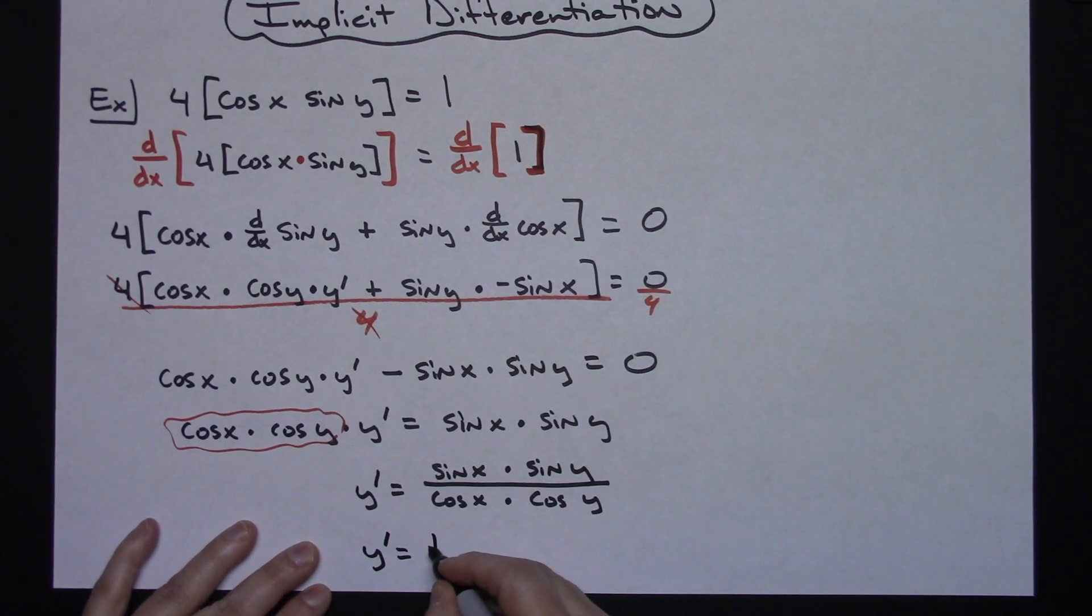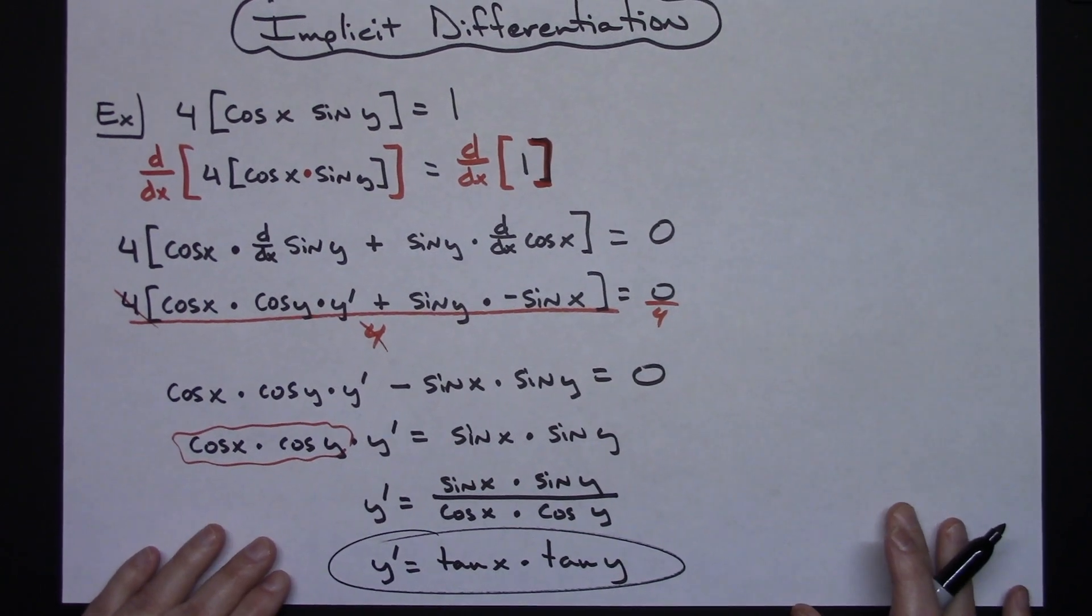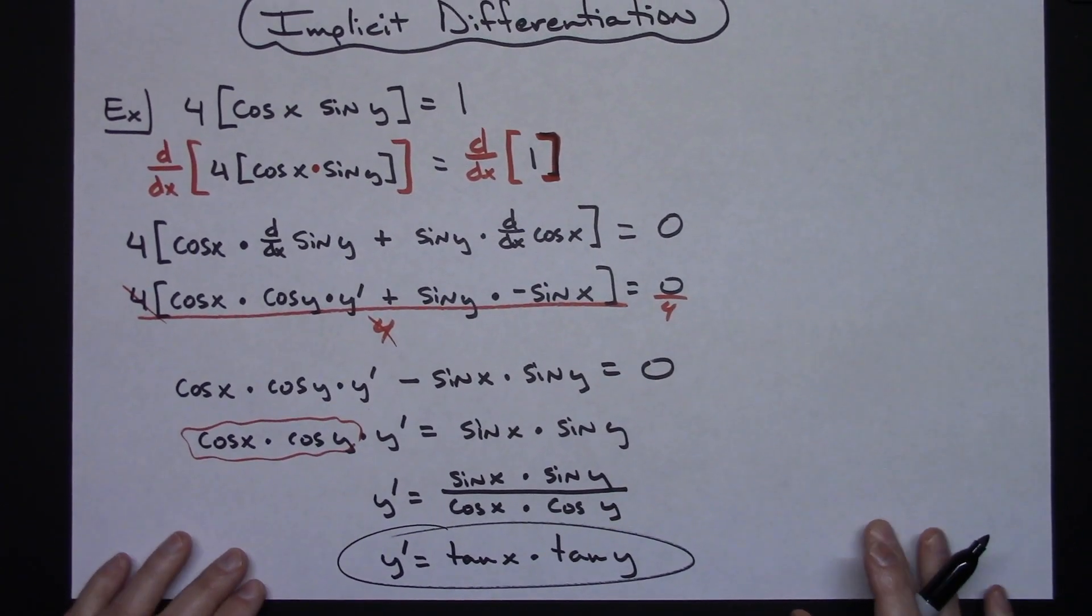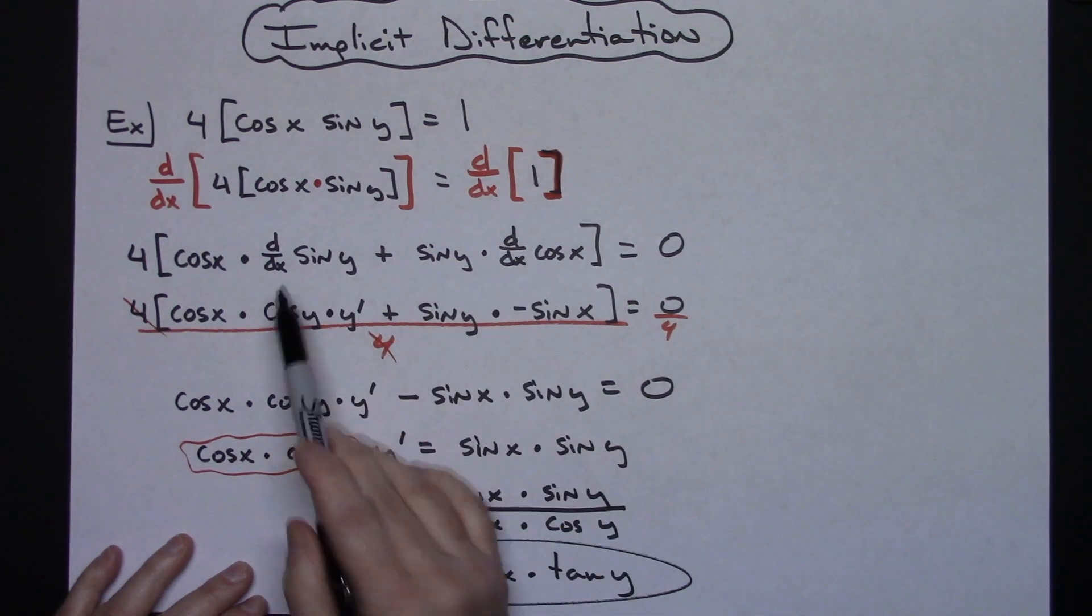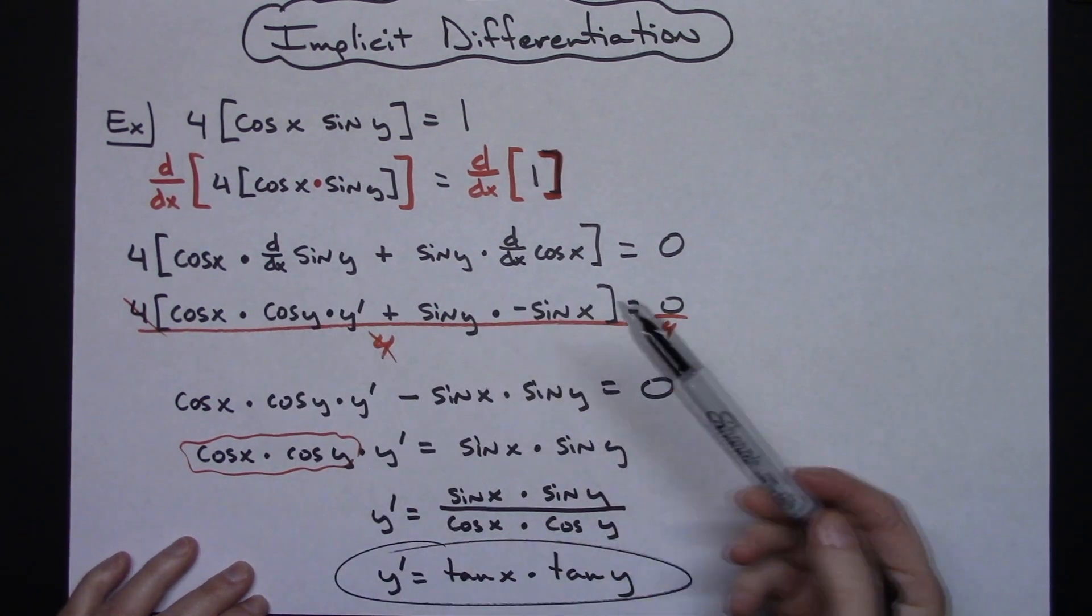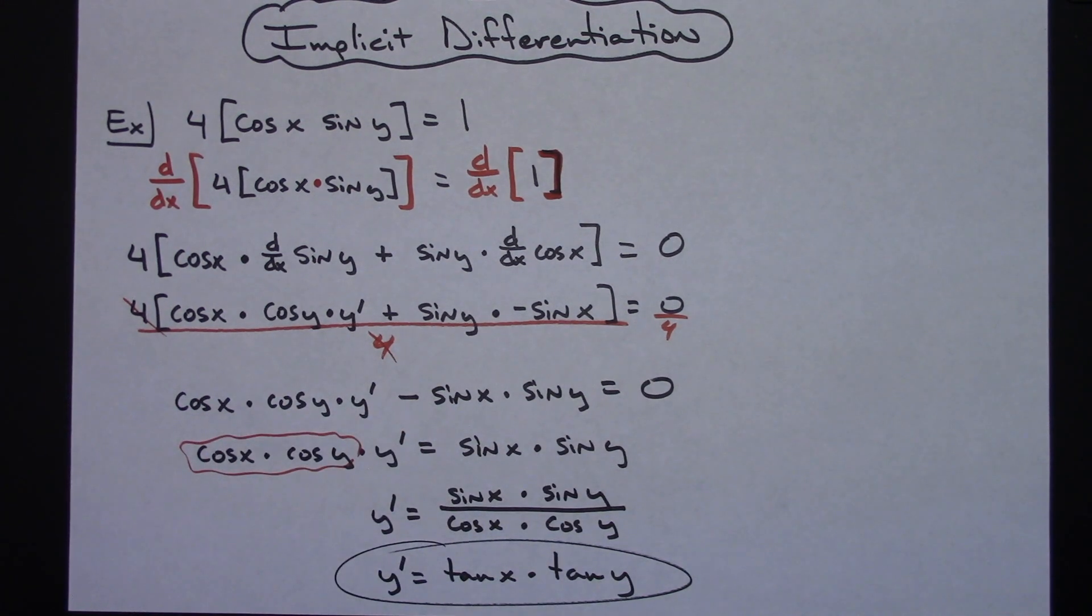All right so actually a pretty straightforward implicit differentiation problem. Definitely using that d/dx notation in there just so that you don't miss a chain. And you can clearly see product rule by doing that work there. Thanks for watching, if the videos are helping don't forget to share with your friends so that they can benefit too and be sure and subscribe to the channel.